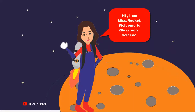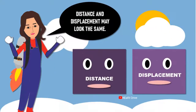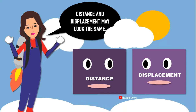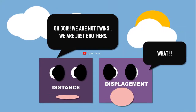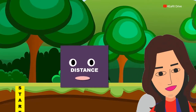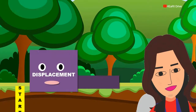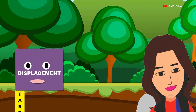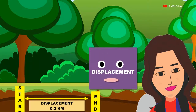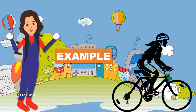Hi, I'm Miss Rocket. Welcome to Classroom Science: Distance and Displacement. Distance and displacement may look the same, but in truth they are two different measurements. Distance is the measurement of path length covered by an object or person. Displacement is the path length between the start point and end point of an object or person.